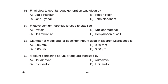56th Question: The final blow to spontaneous generation was given by Correct Answer: Option C: John Tyndall. 57th Question: Fixative osmium tetroxide is used to stabilize Correct Answer: Option C: Cell structure. 58th Question: The diameter of the metal grid of specimen mount used in electron microscopes is Correct Answer: Option A: 3.05 mm. 59th Question: Media containing serum or egg are sterilized by Correct Answer: Option C: Inspissation.